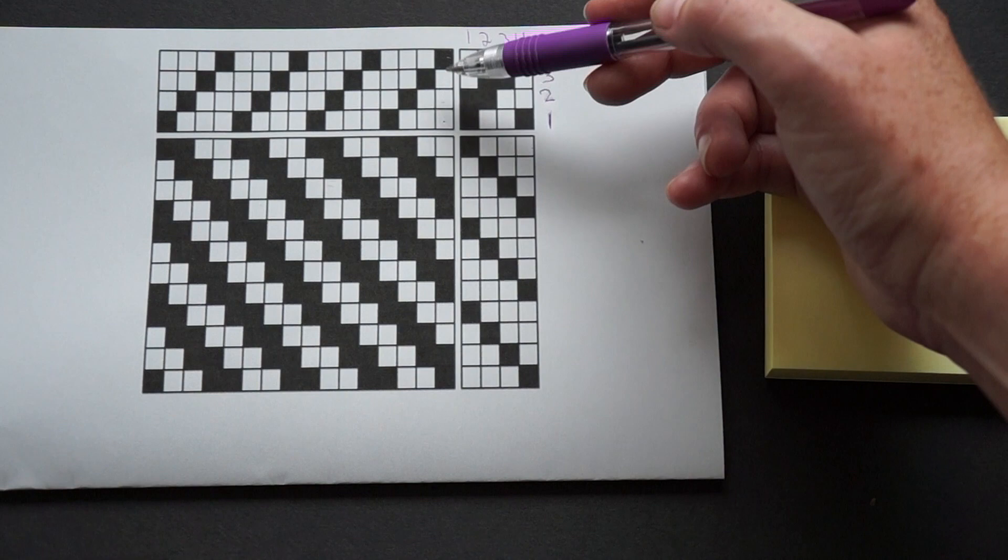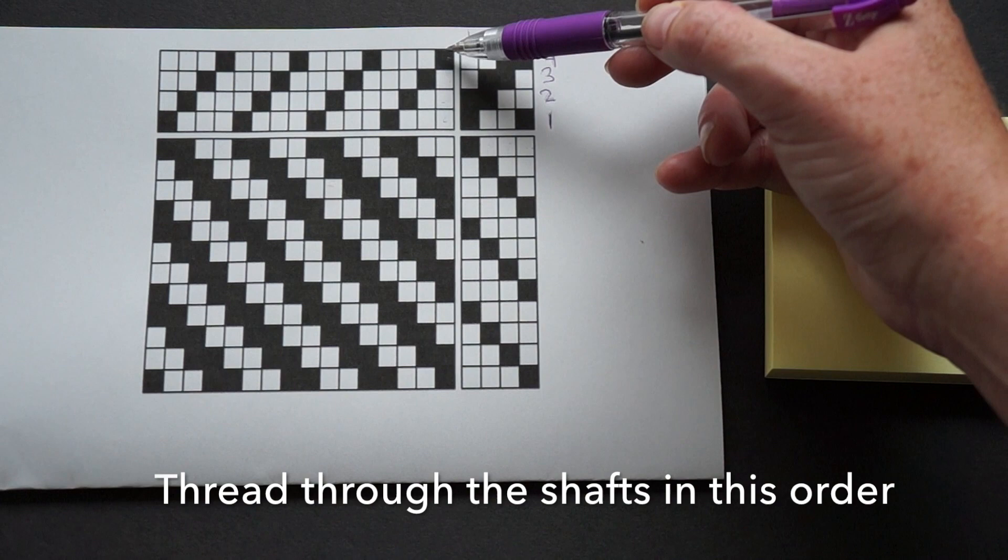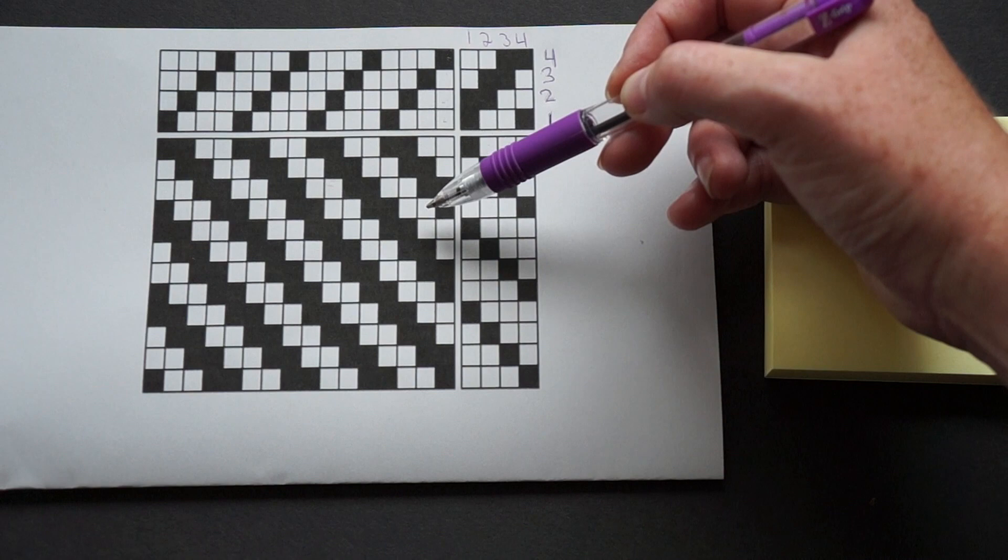So the very first thing you're going to do when you're setting up your loom is set these in the correct order. If you don't do that, you're not going to get this pattern. So just make sure when you start that you're counting these out carefully.